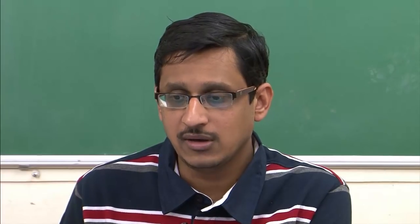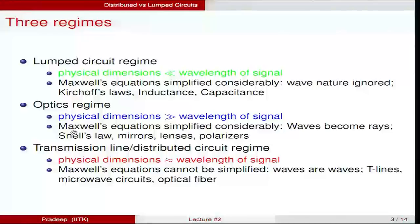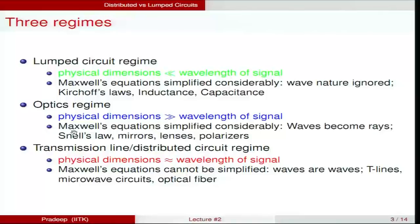For example, if you are running a transistor circuit at 100 kHz, you can calculate the wavelength: assuming speed of light, λ = 3×10⁸ / (100×10³) = 3000 meters. Compared to a 3 km wavelength, the size of a transistor is so small that you can completely neglect its dimensions. In the lumped circuit regime, Maxwell's equations become very simple — wave nature is completely ignored, voltages are voltages, currents are currents, and the corresponding fields are simply static or quasi-static fields.